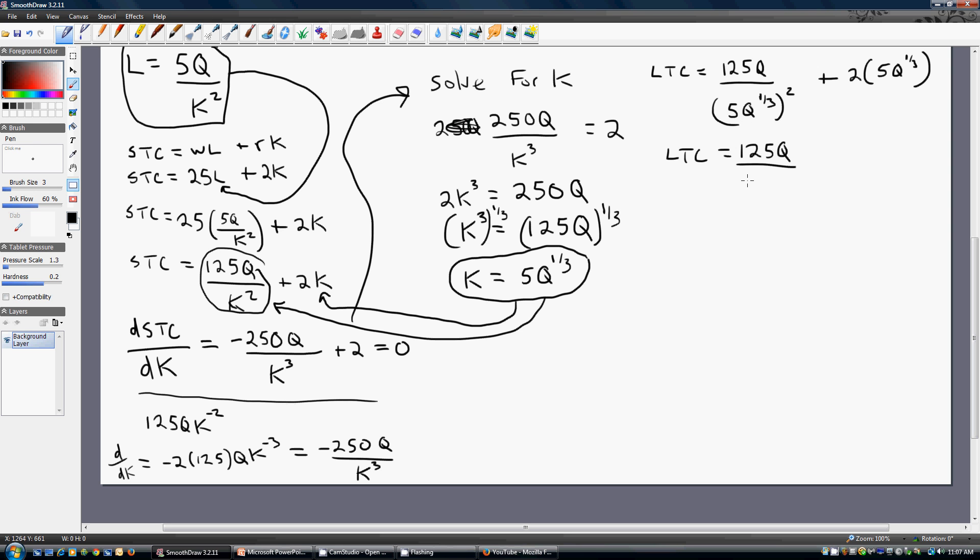So 5 squared is 25. Q to the one-third squared is Q to the two-thirds power. 2 times 5. We're left with this result here on the end. And a little bit more simplification. 125 divided by 25 leaves us with 5. Q divided by Q to the two-thirds power leaves us with Q to the one-third power. And then just adding up the right-hand side, we have our long-run total cost function, LTC.